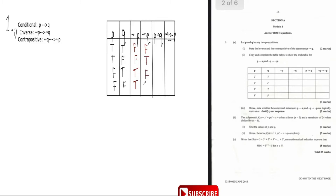For p implies q: it is false only when p is true and q is false. That is the only time p implies q is false; everywhere else it is true. For not q implies not p: it is false whenever not q is true but not p is false. That is the only time it is false; everywhere else it is true.